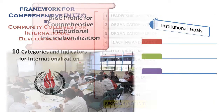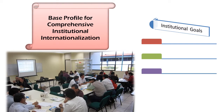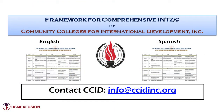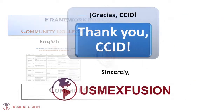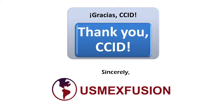When an institution is finished using this framework, it will have a base profile of strengths and opportunities that can be used to easily establish institutional goals. You can request a copy in Spanish or in English by contacting CCID at info@ccidinc.org. US MaxFusion would like to thank CCID for sharing this valuable tool with the higher education community worldwide.